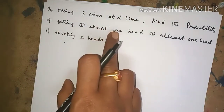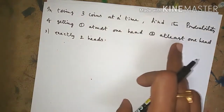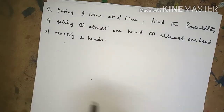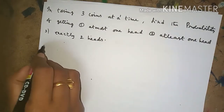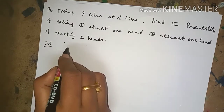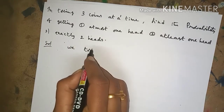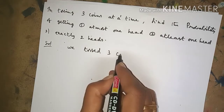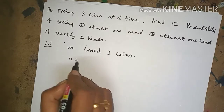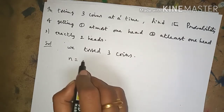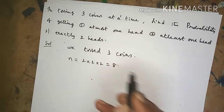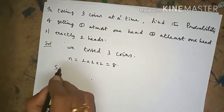Find the probability of getting: first, at most 1 head; second, at least 1 head; third, exactly 2 heads. We tossed 3 coins, therefore n, the total number of elementary events, is equal to 2 into 2 into 2, which equals 8. Now we will write the sample space S.